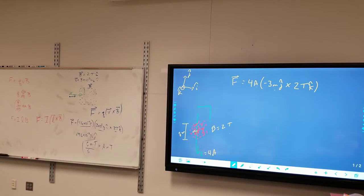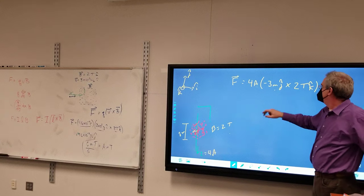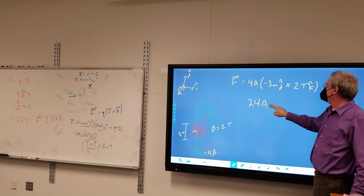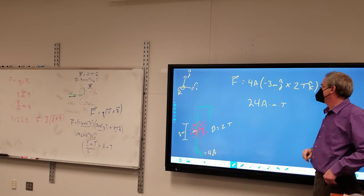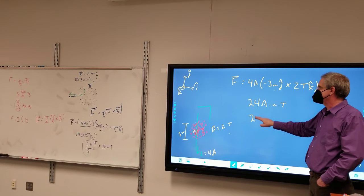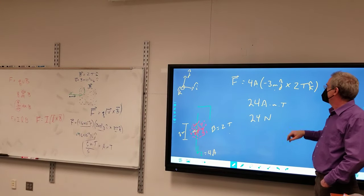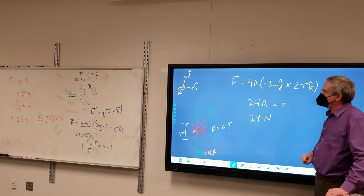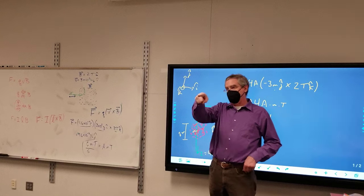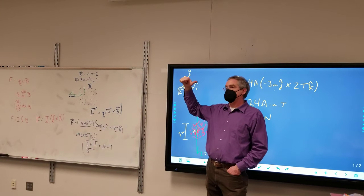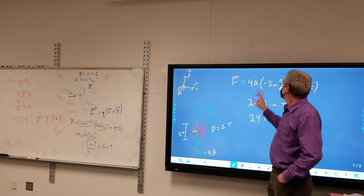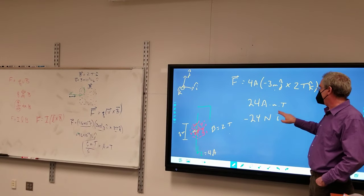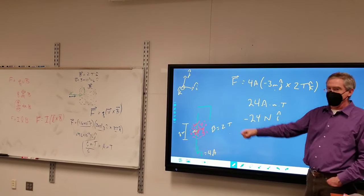So the math piece, got four times three times two is 24 ampere-meters-Teslas, otherwise known as Newtons. And the direction, well, I got J cross K. J is up, K is out. So J cross K is I. That negative sign doesn't go away. So negative I hat to the left as we predicted.